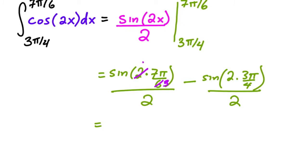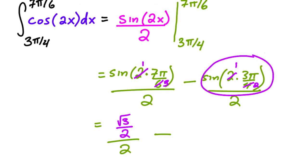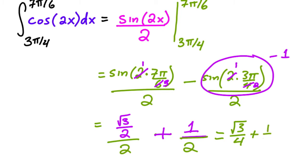The 2 and 6 reduce to give sine of 7π over 3, which from the unit circle is root 3 over 2, all over 2. For the second term, 4 and 2 reduce to give sine of 3π over 2, which equals negative 1, making that term plus one half. The final answer is root 3 over 4 plus one half, or equivalently root 3 plus 2 all over 4.